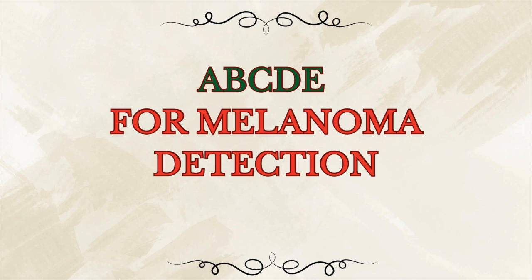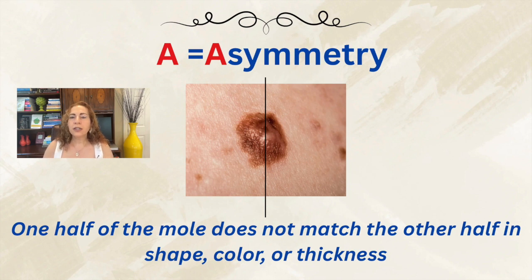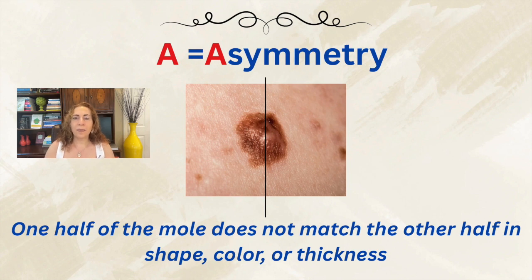So let's break down ABCDE step by step. Starting with A for asymmetry — this means that one half of the mole or lesion doesn't match the other half in shape, color, or thickness. That's different from benign, non-cancerous moles, where both halves typically look the same. But in melanoma, the lesion is often irregular and asymmetrical.